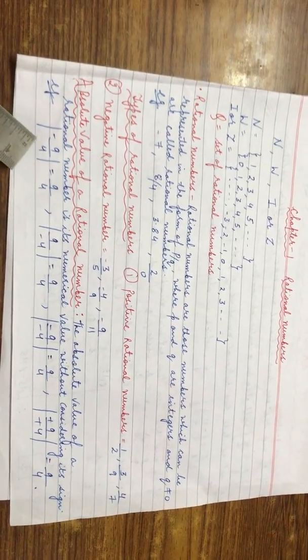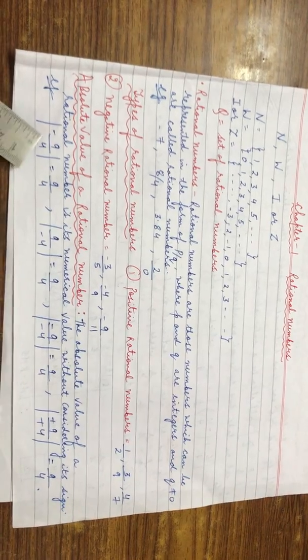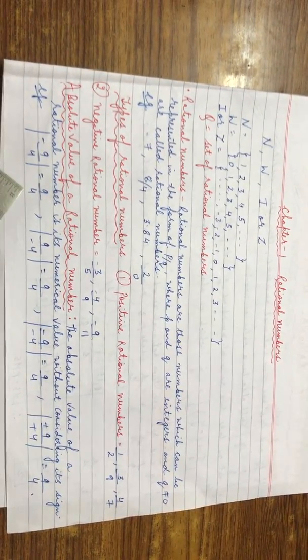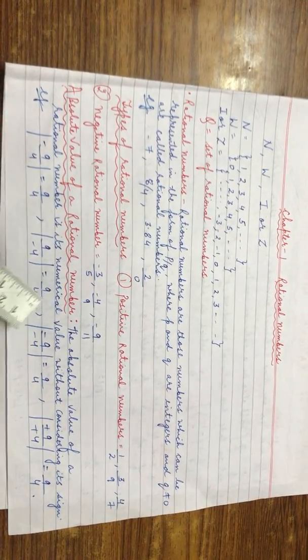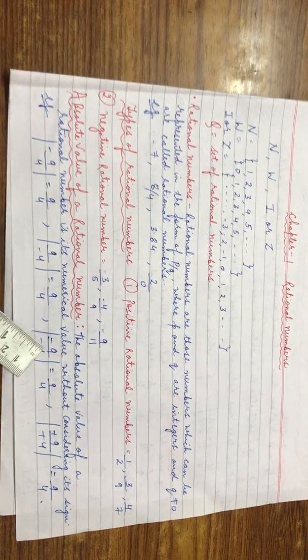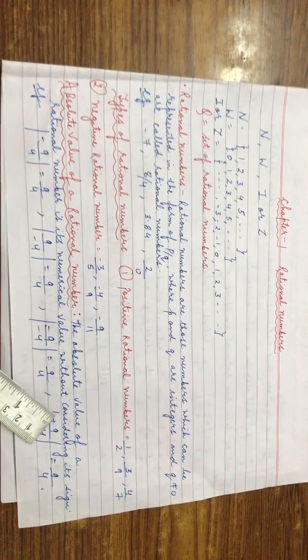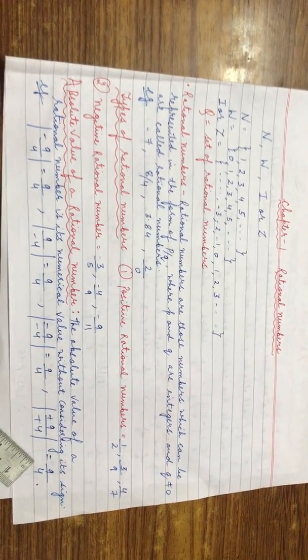Now look at the example. Absolute value comes in the mod. Minus 9 upon 4 will be equal to 9 upon 4. 9 upon minus 4 will be equal to 9 upon 4. Minus 9 upon minus 4 will be equal to 9 upon 4. If both are positive, then the answer will be also the same. Thank you.